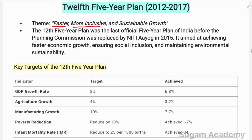Faster means speed of growth; inclusive means inclusion of all sections of society; and sustainable growth means growth without hampering the needs of future generations — that is sustainable development, using resources wisely without waste. The 12th Five Year Plan was the last official Five Year Plan of India.